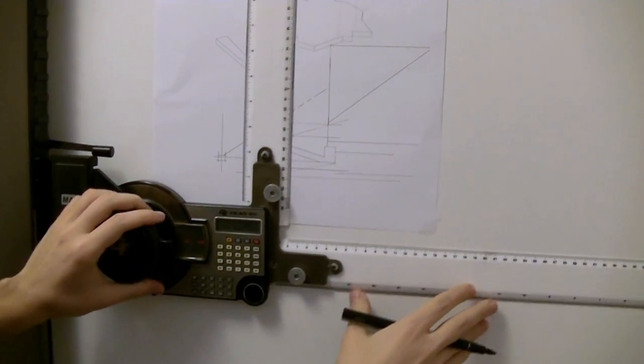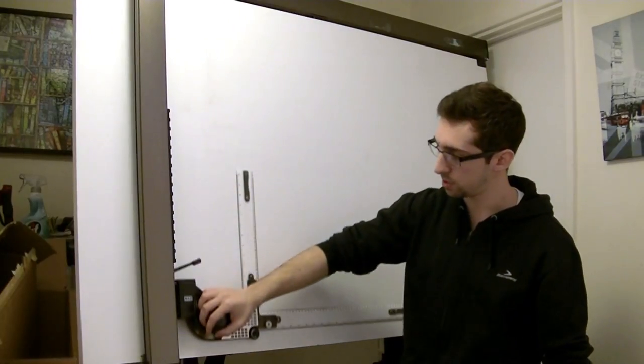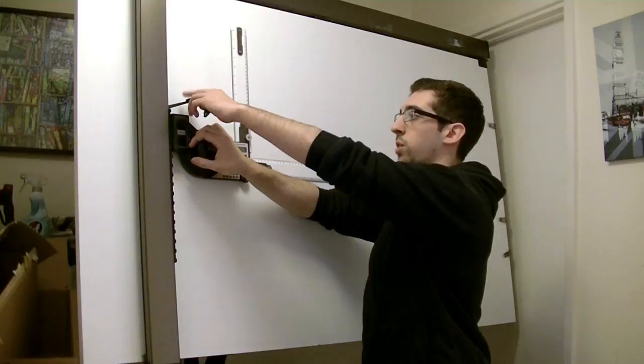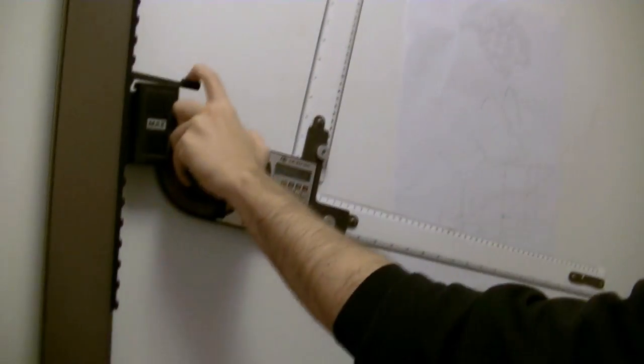The vertical rail moves from one side of the table to the other and has a lock as well. When you want to set your position, just lock it on.